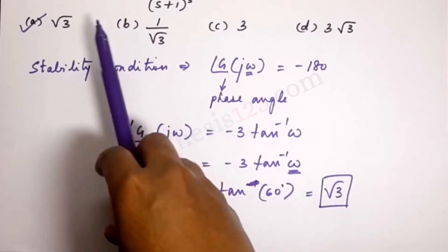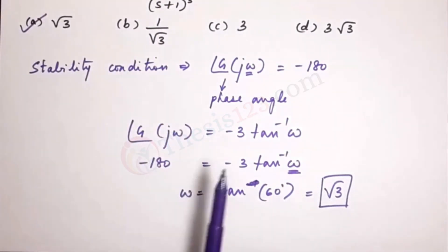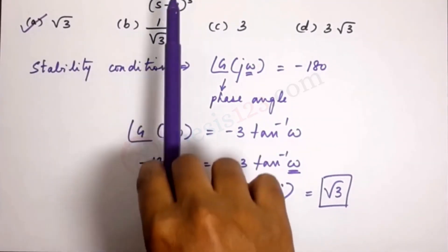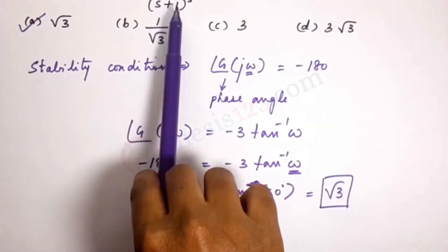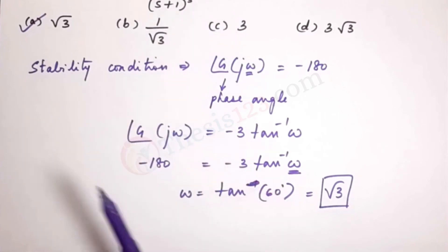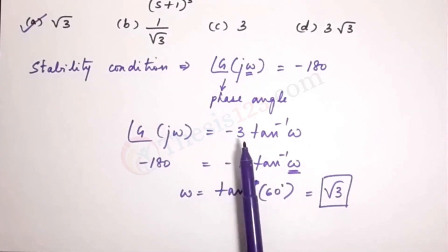You should be able to convert the transfer function given into an equation according to the stability condition. So because it is 100 divided by s plus 1 to the power of 3, that's s plus a to the power of n, you can write it as minus 3 tan inverse of omega. So I hope this has helped. Let's go to the next question.